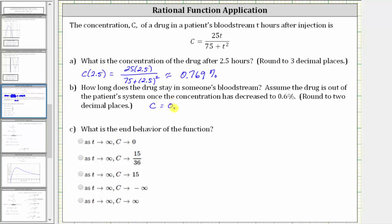Therefore, we substitute 0.6 for C and solve for T, which gives us the equation 0.6 equals 25T divided by the quantity 75 plus T squared.